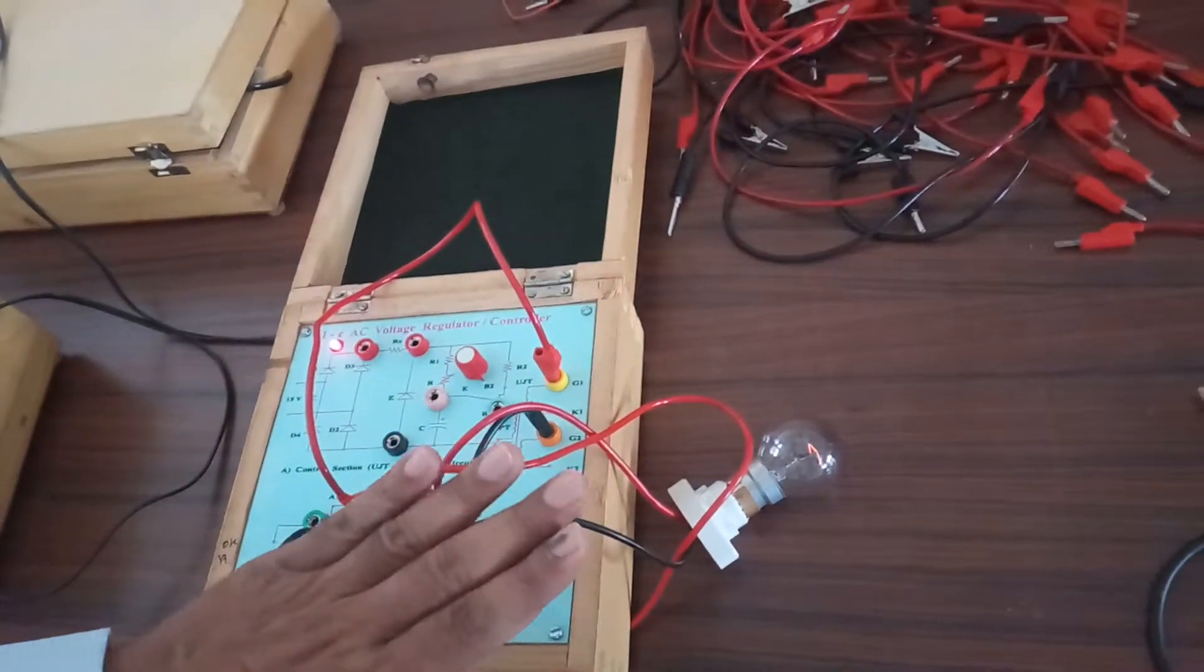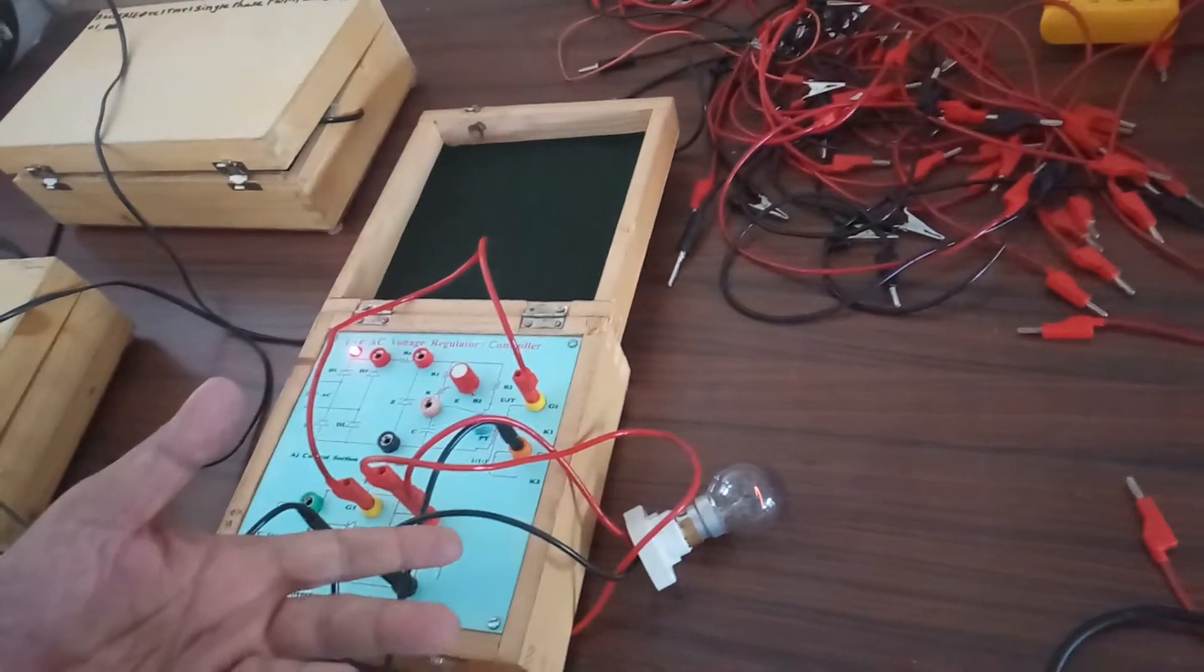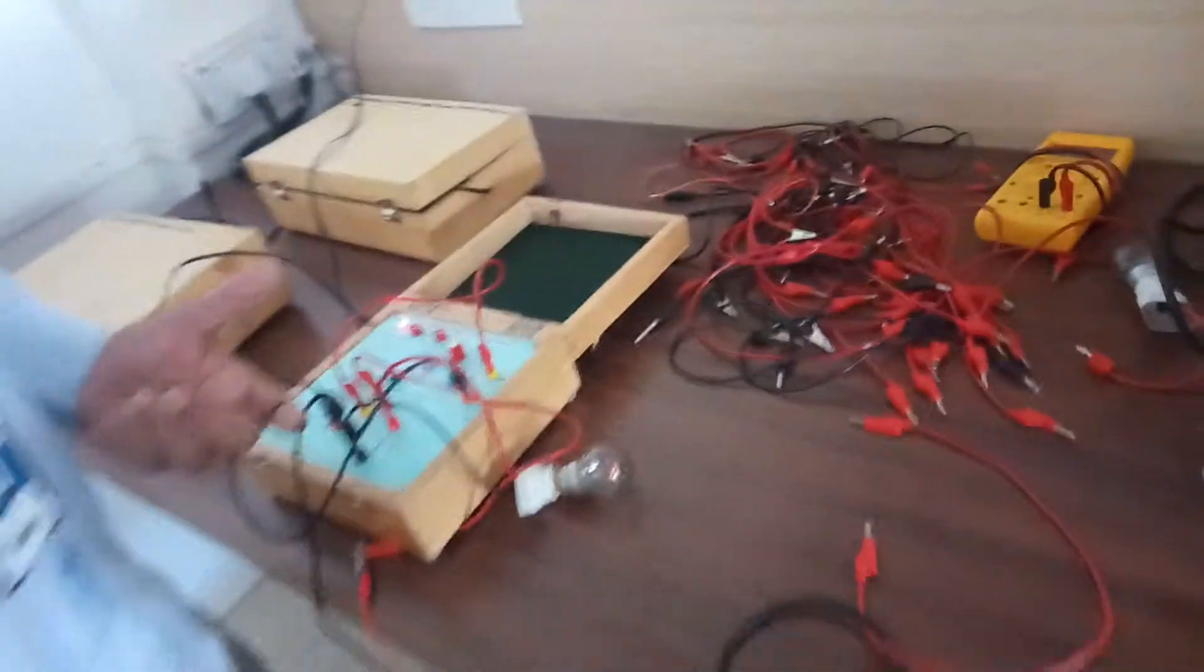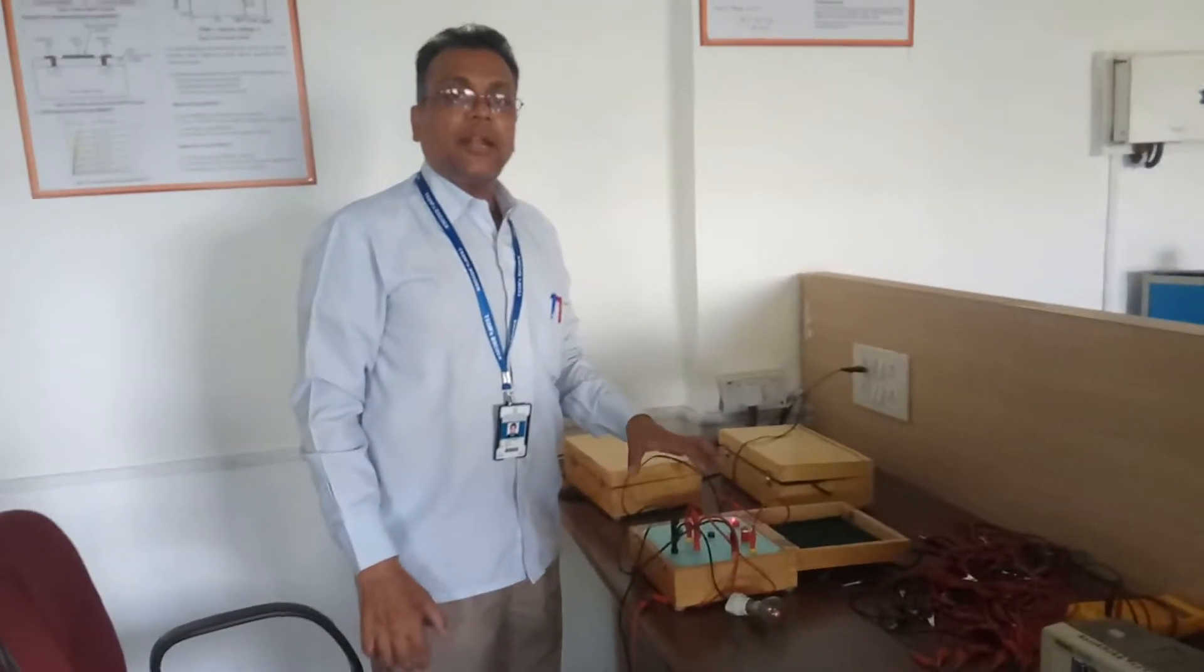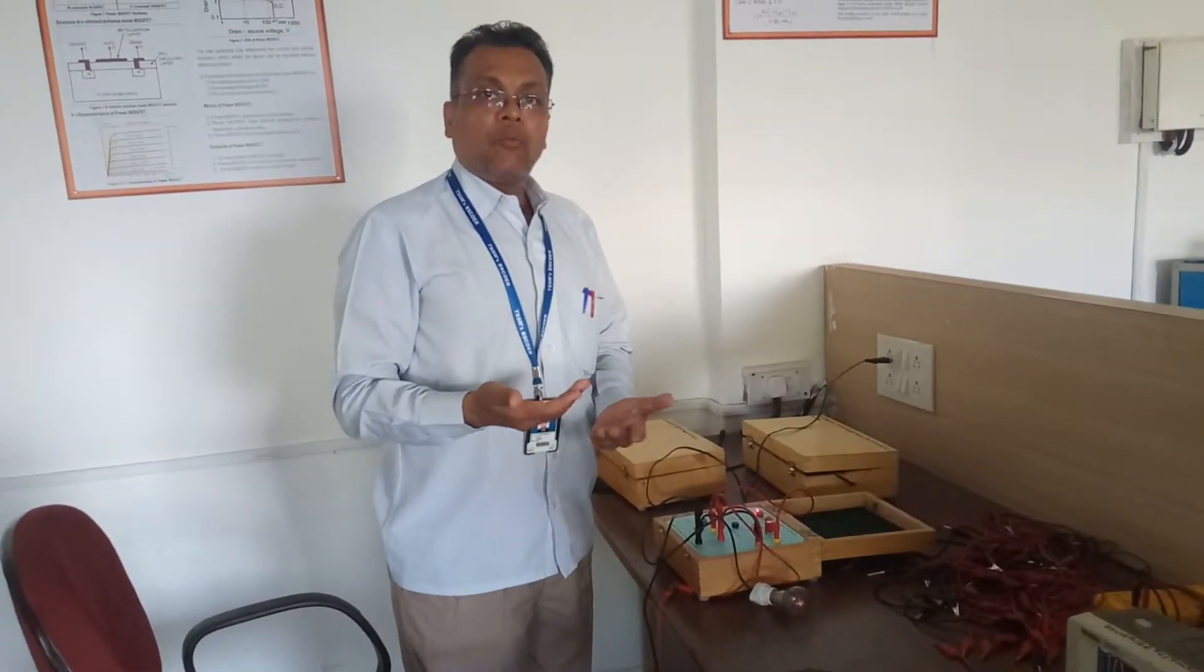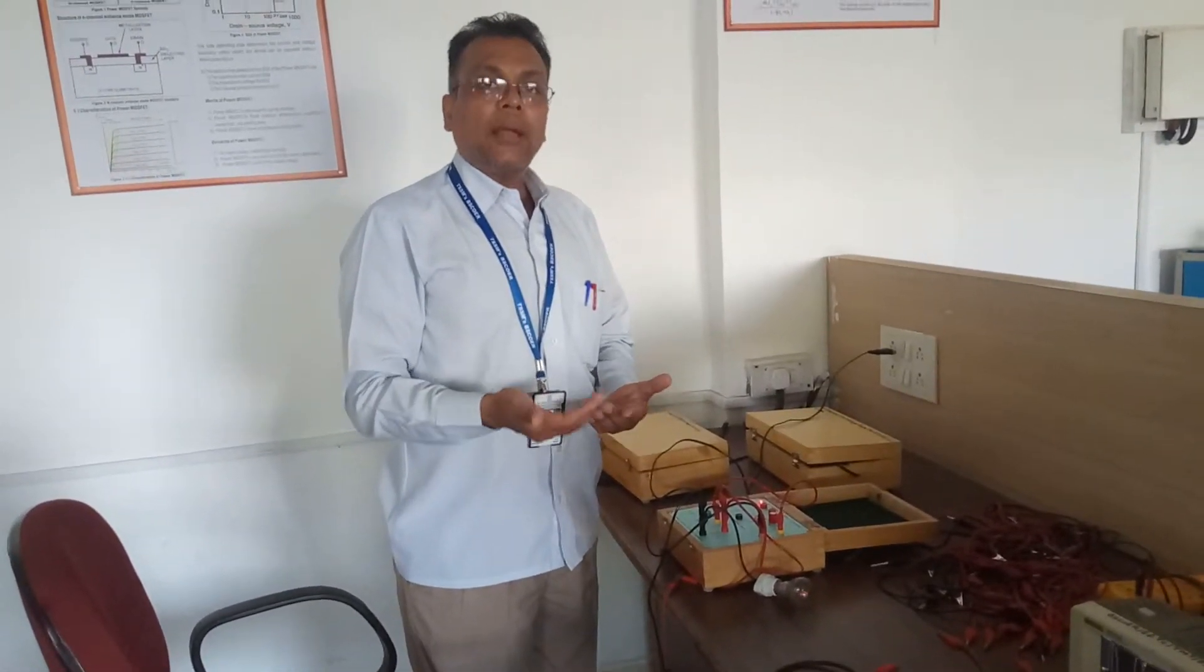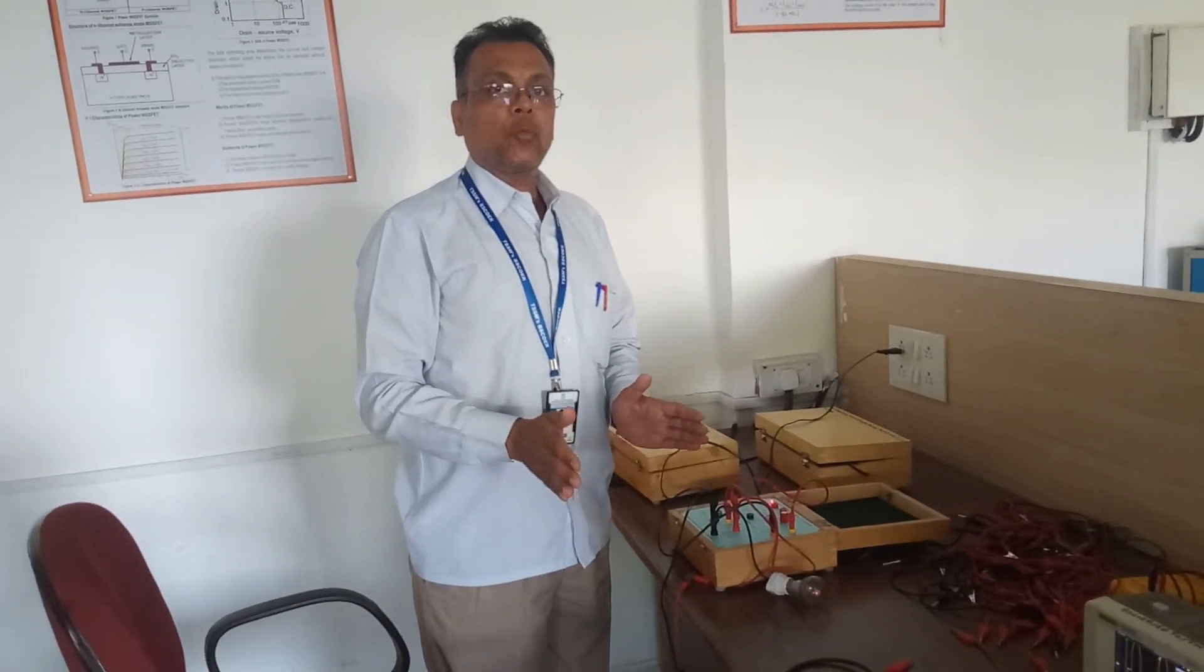So these types of circuits you can use for fan speed regulator or lamp dimmer circuits, light intensity control. So all these, this circuit you can use for variable intensity or variable power, which is AC at the output. Thank you.